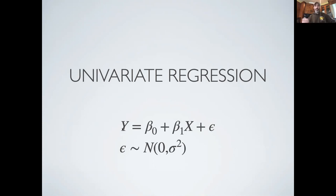I want to emphasize that if x is some categorical variable — for example, if x recorded control versus treatment, where all control data is recorded as zeros and all treatment data as ones — then this is still a univariate linear model. But that univariate linear model is actually equivalent to a one-way ANOVA. So if x is categorical, it's the same equation to describe an ANOVA; if x is continuous, it's a regression.